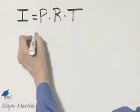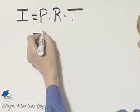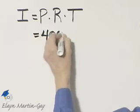What are the values given? The principal is $400, so I'll write down 400.